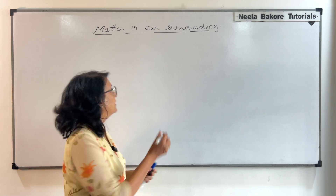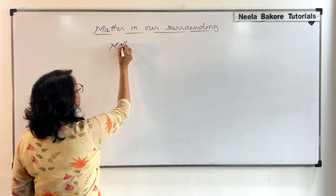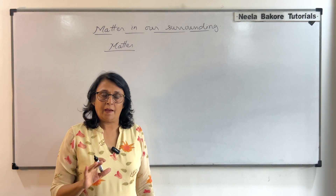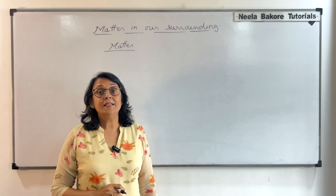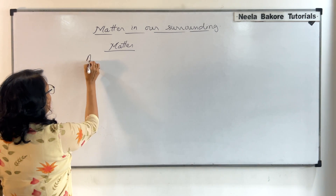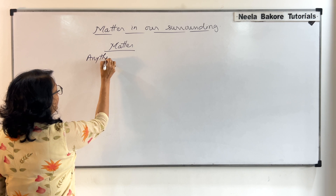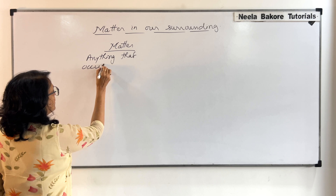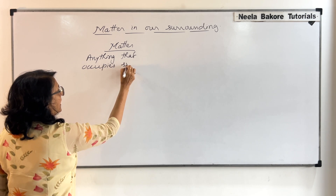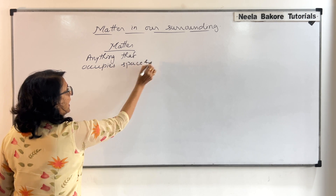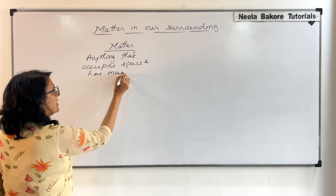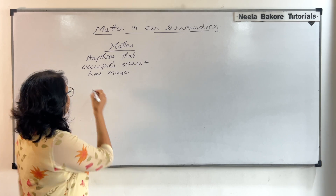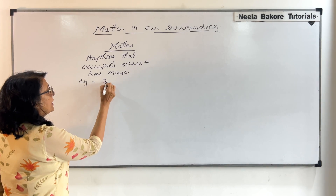What exactly is matter? A very simple definition: anything that occupies space and has mass is termed as matter. Let us take some examples — can we call air as matter? It has to fit into our definition: it has to occupy space and it has to have some mass.